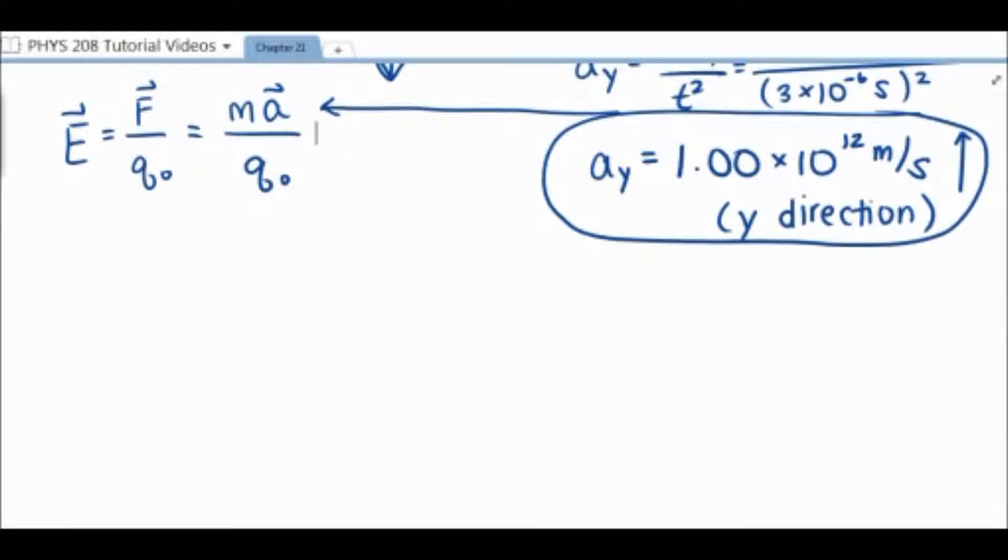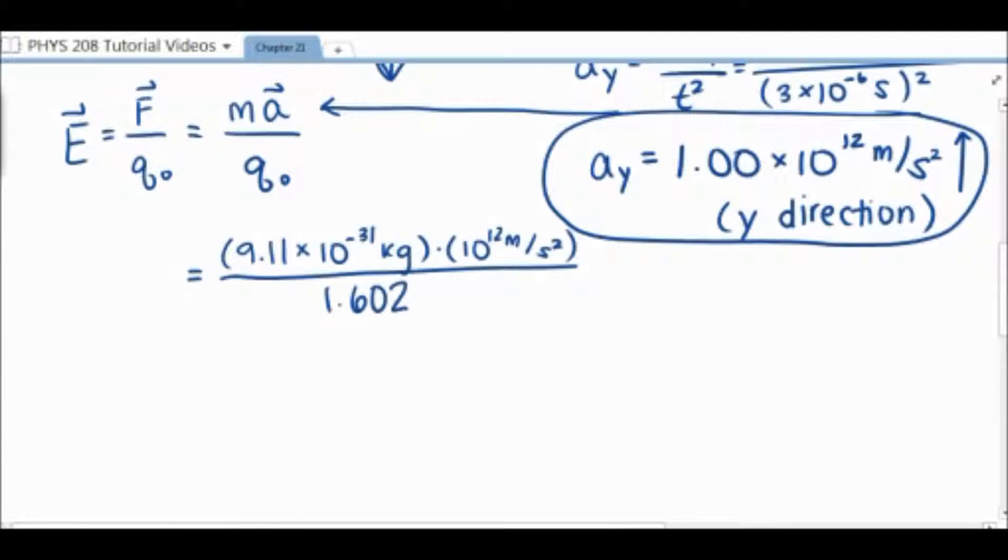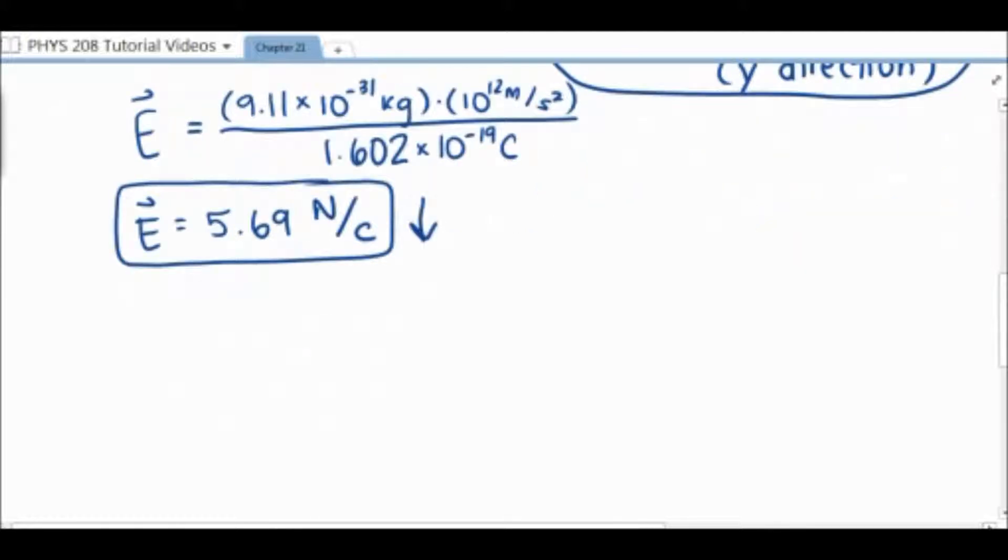So we're going to go ahead and plug this in and solve for our electric field. So we plug in M, the mass of the electron, which we know is 9.11 times 10 to the negative 31st kilograms. We multiply that by our acceleration, and then we divide it by the charge of an electron, which is 1.602 times 10 to the negative 19th coulombs. When we plug this into our calculator, we get the electric field is 5.69 newtons per coulomb.